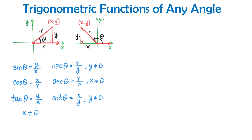The hypotenuse R is always positive because it represents the distance from the origin to the point. Angle theta is not an angle inside the triangle but rather the obtuse angle in standard position. To find the trigonometric functions of this angle, we use exactly the same definitions: sine of this angle is y over R, cosine is x over R, and tangent is y over x.